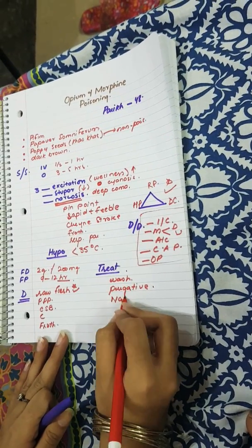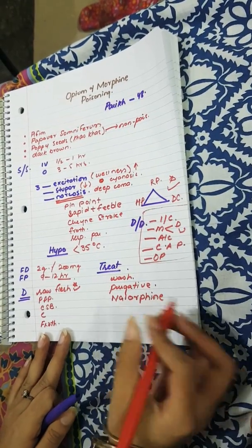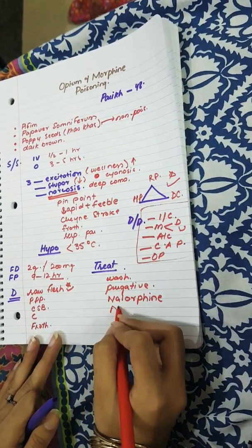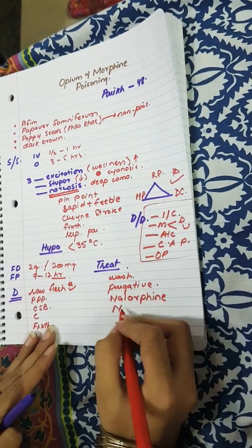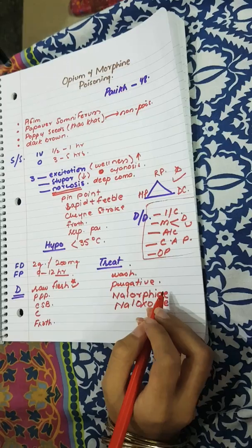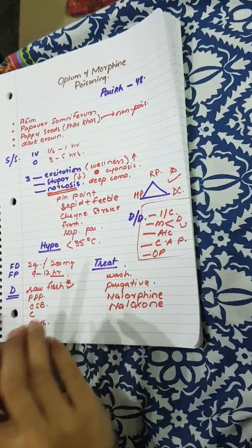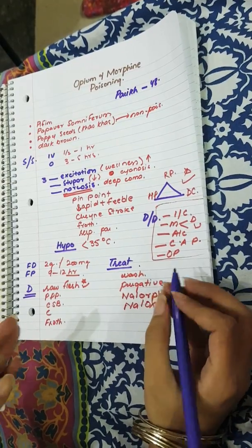The antidotes are nalorphine, or now it is being replaced by a more potent antagonist that is naloxone. The nalorphine is a specific antidote and is given intravenously in a dose of 5 to 10 mg every 50 minutes.